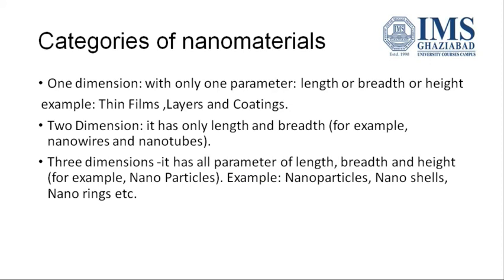Nanomaterials are characterized in three categories. The first is one dimension, which has only one parameter — that is length, breadth, or height. For example, thin films and coatings over any surface are characterized as one-dimensional nanomaterials.